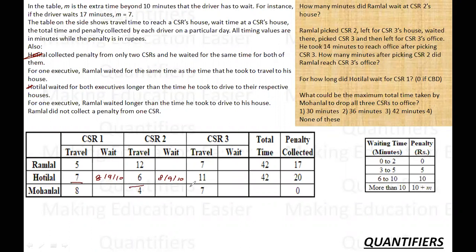7 and 6, 13 and 11, 24. 24 minutes are already taken in travelling. Total time was 42 plus 18, which means total wait time was 18 minutes. Since wait time was 18, there are two cases possible. First case, 8 minutes wait, 8 minutes wait and 2 minute wait. And then 9 minute wait, 9 minute wait and 0 minute wait. These are the two possible cases for Khotilal.